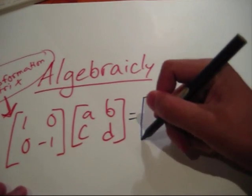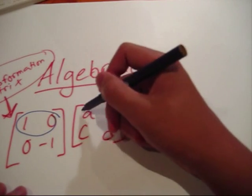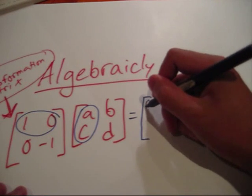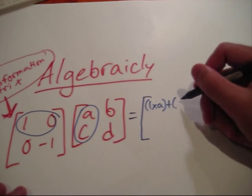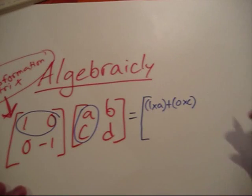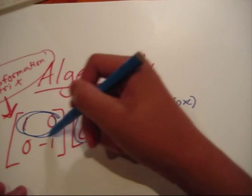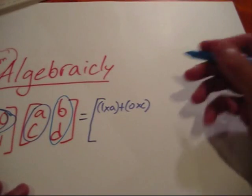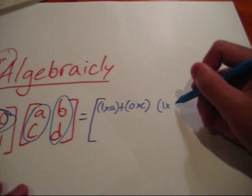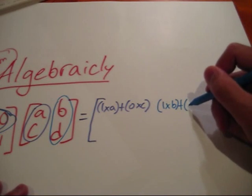Now, that is the 1 times A plus the 0 times C. Next would obviously be the 1 times B and the 0 times D.